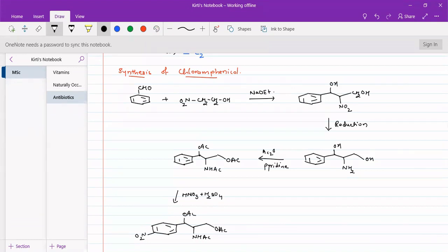So we can do hydrolysis of this protecting group. So we will remove it. Again we will get OH, NH2, and OH.